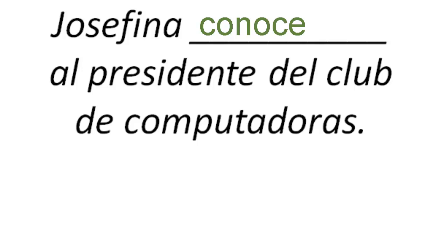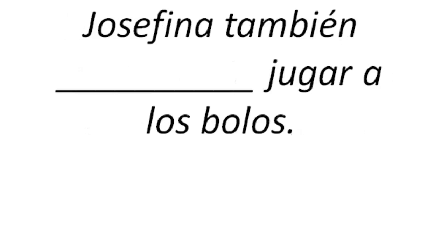And our last one: Josefina también ___ jugar a los bolos. If she knows how to go bowling, the verb will be saber. Since it's Josefina, it would be sabe. Josefina sabe jugar a los bolos. Okay, that's a real quick review of the difference between saber and conocer. We'll talk more about those in class. Chao.